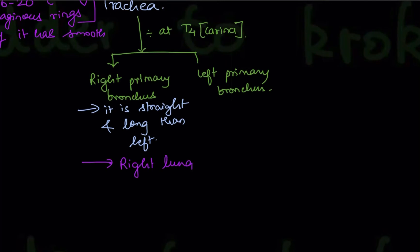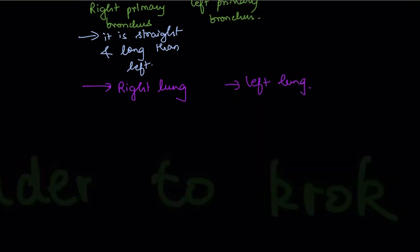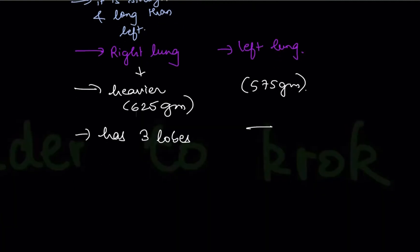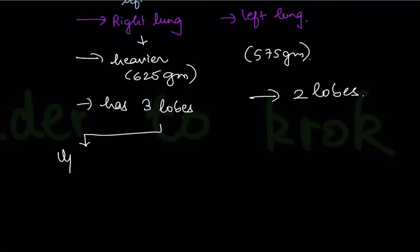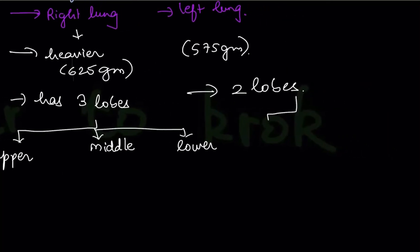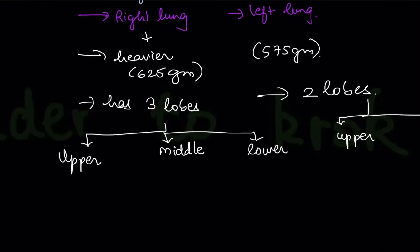Now the differences between the two lungs: the right lung is heavier at 625 grams, and the left lung is 575 grams. The right lung has three lobes made by two fissures. The three lobes are the upper lobe, middle lobe, and lower lobe. The left lung has two lobes — upper and lower — made by one fissure.